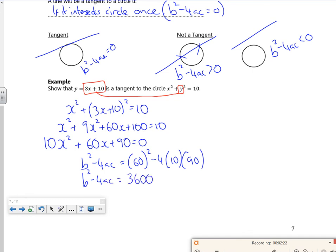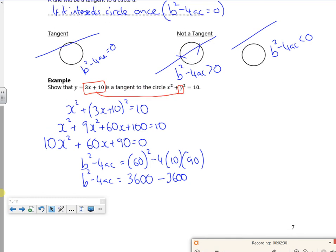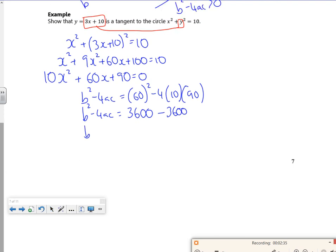So 3600 minus 3600. So b squared minus 4ac is zero. Therefore y equals 3x plus 10 is a tangent, as a tangent.